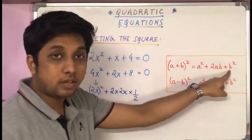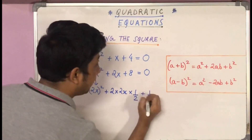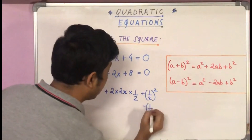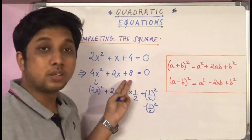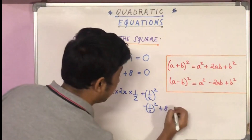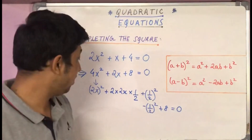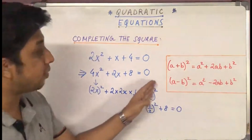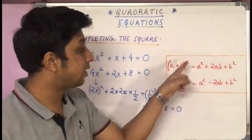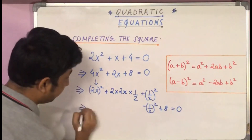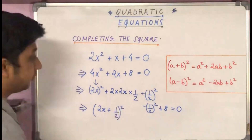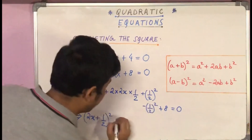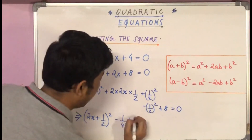We need to add b² = (1/2)² = 1/4. Since it's not already present, we add (1/2)² and subtract (1/2)² to keep the equation balanced, plus the remaining term +8, all equal to 0. The part (2x)² + 2×(2x)×(1/2) + (1/2)² is of the form a² + 2ab + b² = (a + b)², so it becomes (2x + 1/2)². Thus: (2x + 1/2)² - 1/4 + 8 = 0.